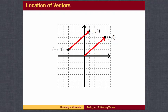This motion is independent of the starting location. For instance, the vector which starts at negative 3, 1 and ends at 1, 4 is the same as the vector which starts at the origin and ends at 4, 3 in the following sense. The two red vectors have the same length and are pointed in the same direction. In other words, they are parallel.